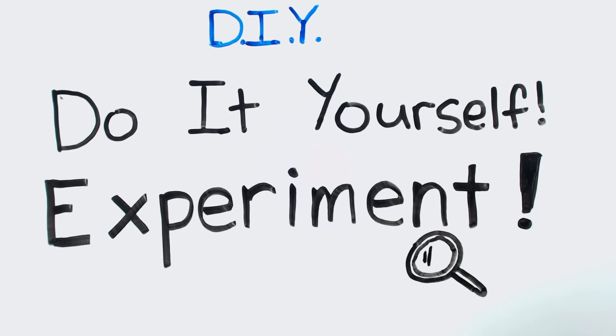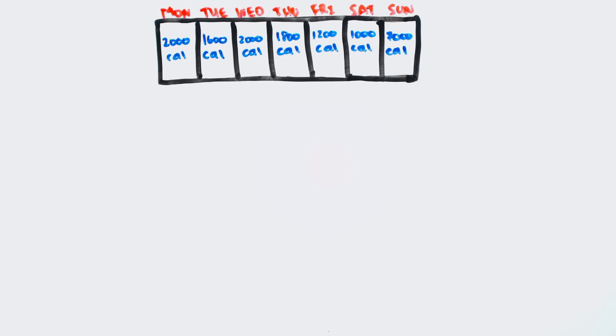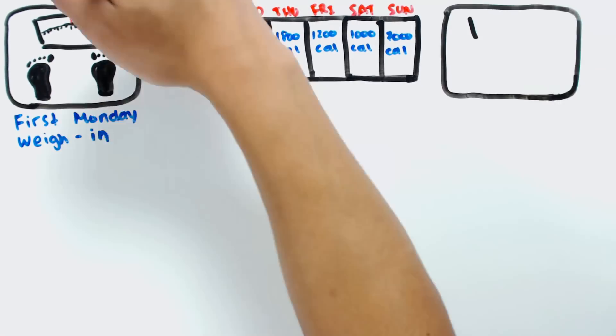A simple way of calculating the amount of calories is by running an experiment on yourself. For one week, record the amount of calories you eat each day and weigh yourself at the beginning of the week and at the end.